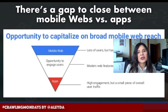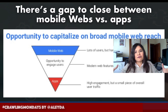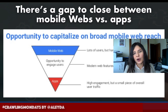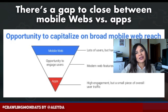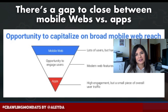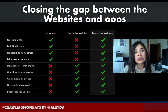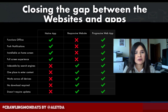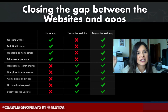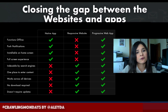Progressive Web Apps close the gap between mobile web — which has very high reach but is difficult to use offline and has engagement challenges — and native apps, which are more engageable but live in a closed environment where content is not open. PWAs bring functions like push notifications, installability on the home screen of smartphones, and a full-screen experience.